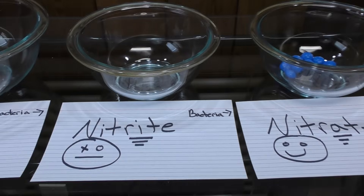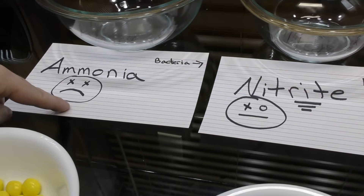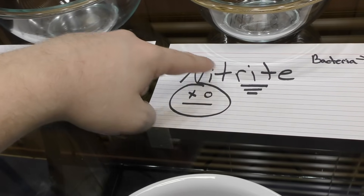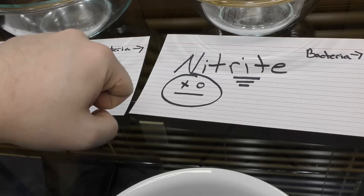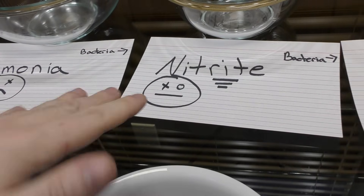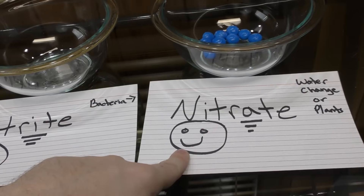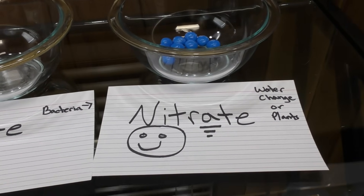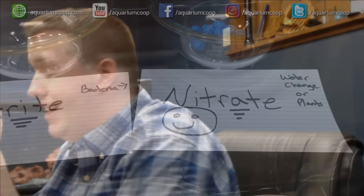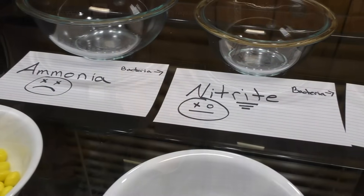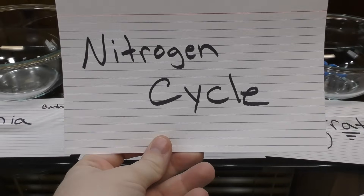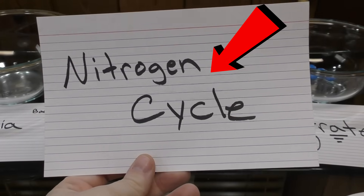So now you can understand: we take ammonia — very toxic — use bacteria that makes nitrite. Notice the I — he only has one eye that hurts and is only moderately unhappy. We use another bacteria and make it nitrate — notice the A, he's super happy. Then we do a water change or use plants to take that out of the water. That process could take weeks or months, or be very quick if you get a cycled filter from your local fish store, buy some live plants, or use an additive. And we call that process the nitrogen cycle — that's how you cycle an aquarium.